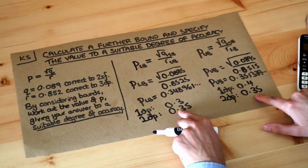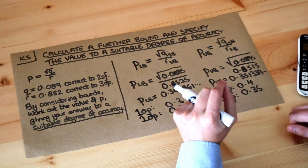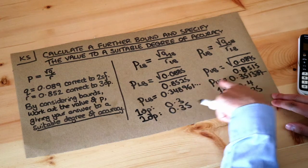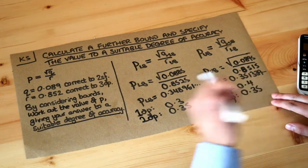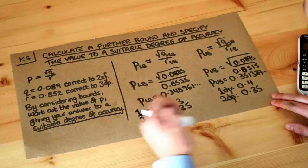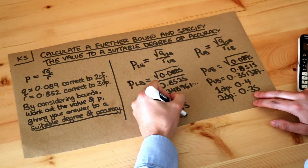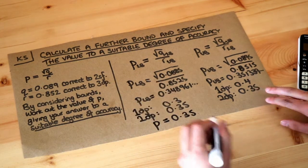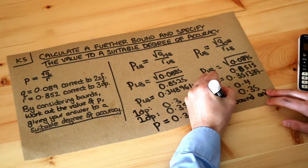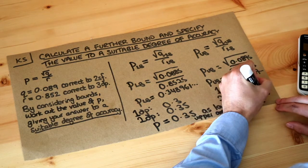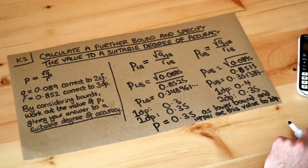These are the same value, so a suitable value of P to give is 0.35. Wherever P lies between the lower bound and the upper bound, we can guarantee that to two decimal places we get 0.35. So P equals 0.35, and if asked for a reason, you say that the lower bound and upper bound both equal this value to two decimal places — both bounds agree to that level of accuracy.